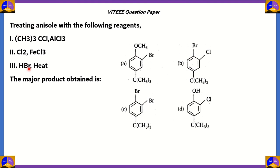We have a set of reagents: (CH₃)₃CCl with AlCl₃, then FeCl₃, and HBr with heat. If you are treating anisole with the following reagents, you need to find out which of these is the major product obtained. We have four options — which of these is the correct option?